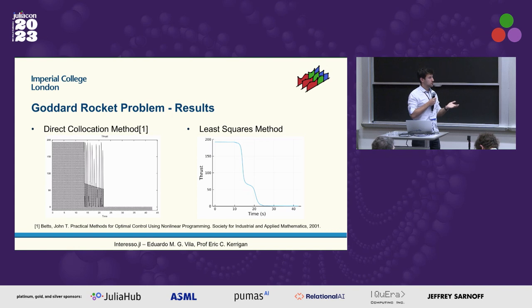And so these are the results. If you look at a state-of-the-art solver, for example, the one presented in Betts, the book, you see that you actually have a singular arc for some of the problems like this one.